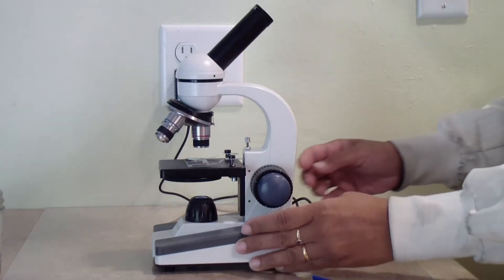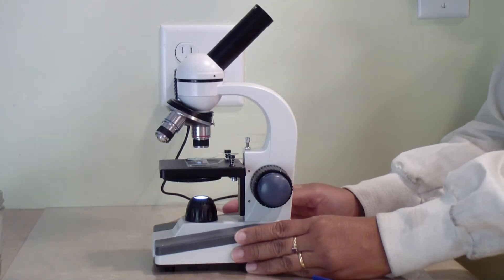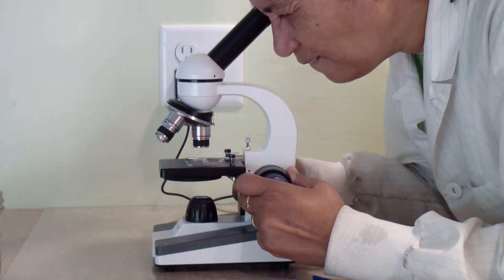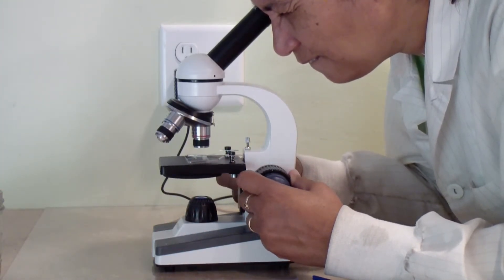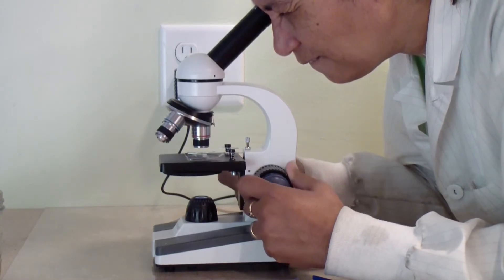Start with the low magnification and the stage all the way down. While looking into the eyepiece, turn the coarse focus knob so that the stage moves up until you can see the cotton fibers clearly.